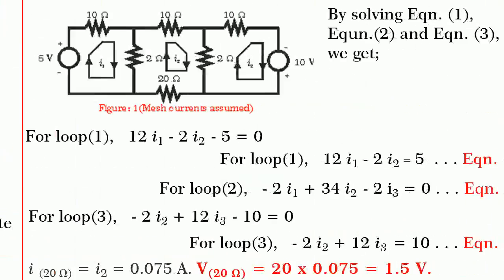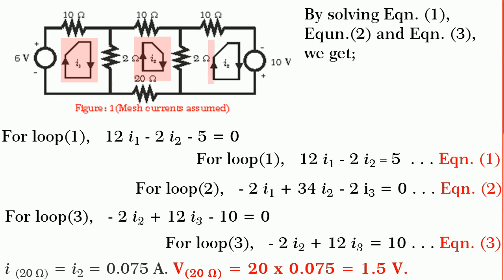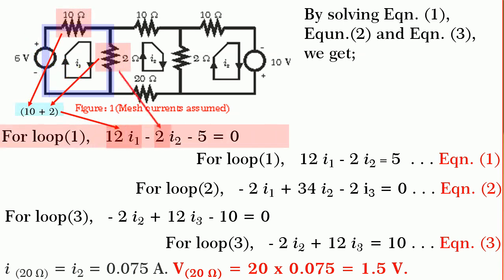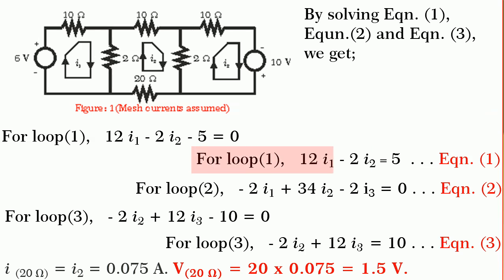Let i1, i2 and i3 be the assumed mesh currents as shown in figure. By writing the Kirchhoff's voltage equation for loop 1, we get 12 i1 minus 2 i2 minus 5 is equal to 0. By rearranging it, we get equation 1.